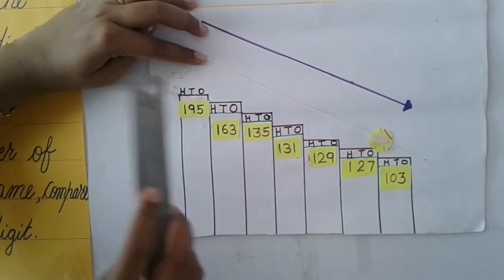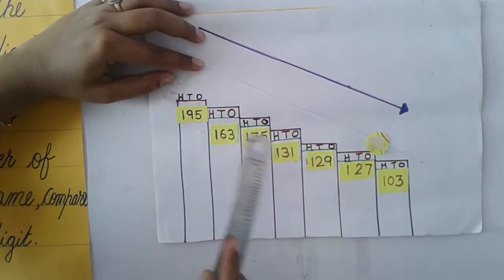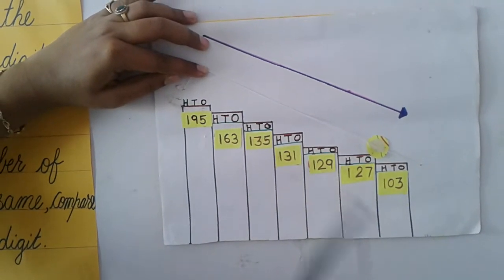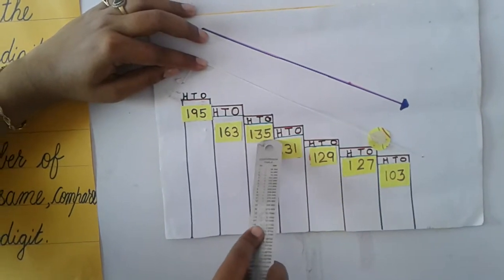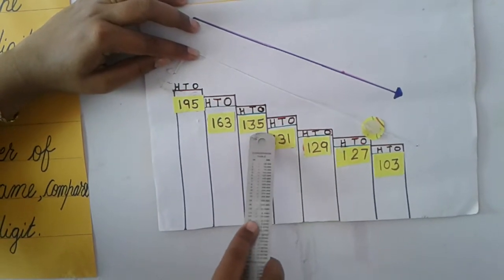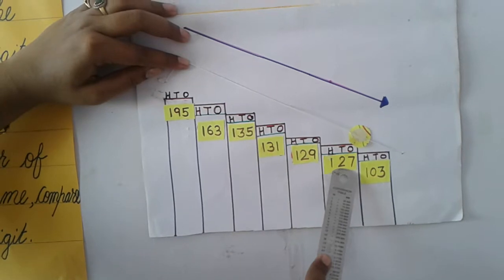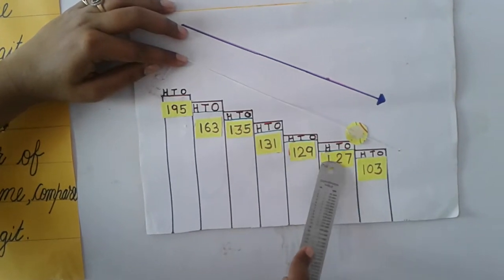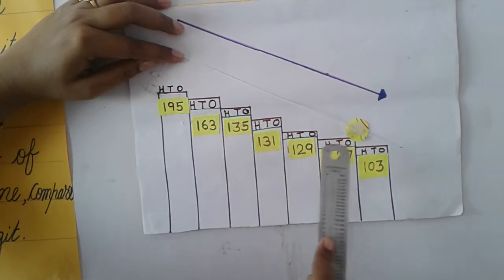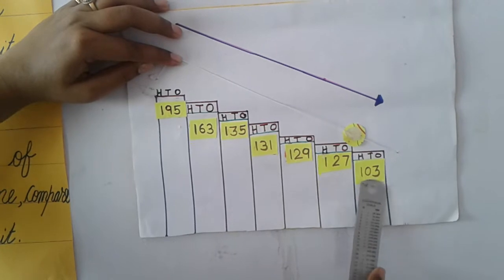In the tens place, 9 is the biggest, so 195 is placed first. Then 6, so 163 is second. Now for 135 and 131, the tens digit is 3 in both, so we compare the ones place — 5 is bigger, so 135 comes before 131. Then 129 and 127: the tens digit is 2 for both, so we compare ones — 9 is bigger, so 129 comes before 127. Last is 103.